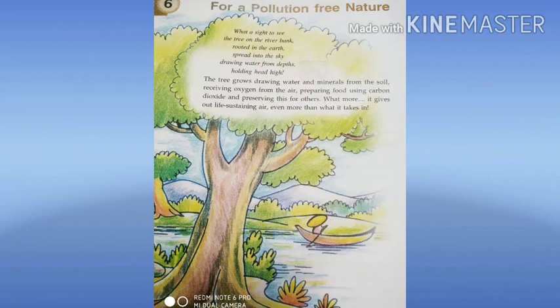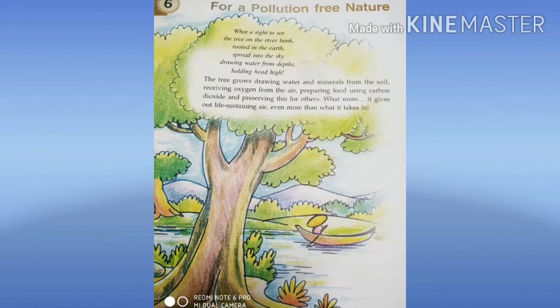For photosynthesis, the materials needed by the plant are carbon dioxide, water, sunlight, and chlorophyll. These are the materials needed for plants to prepare their own food. During the process of photosynthesis, they absorb carbon dioxide from the atmosphere and release oxygen during daytime. This process maintains the carbon dioxide and oxygen levels in the atmosphere.